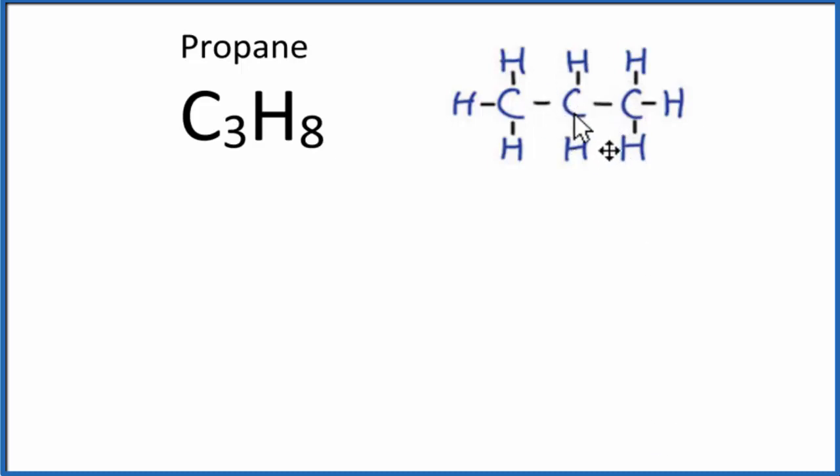So the central carbon has four groups attached to it. It has this methyl group here with the carbon, that's one, hydrogens, two, three, and then finally over here this other methyl group. So four different groups.